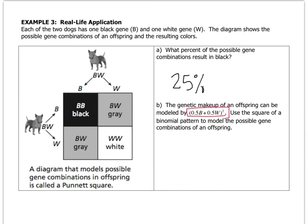And it's going to be the first term squared, the second term squared, and then the piece in the middle is going to be double the product. So the first term squared, well 0.5b squared is 0.25b squared. 0.5 times 0.5 is 0.25. Same thing over here at the end, 0.5w squared is 0.25w squared. So now we have to figure out what the middle piece is going to be.